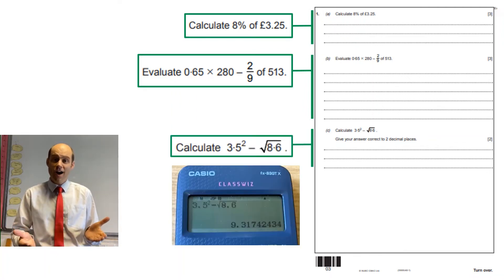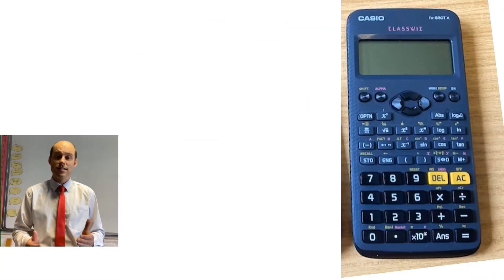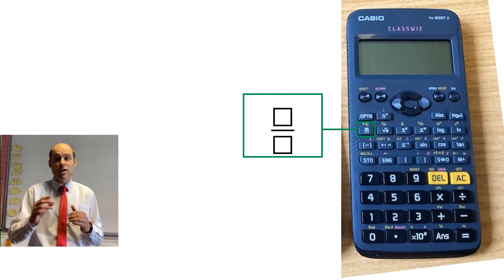Taking a closer look at our calculators, we can see the SD button, which changes a fraction into a decimal. That's really useful. The fraction button allows you to type a fraction exactly as it is.